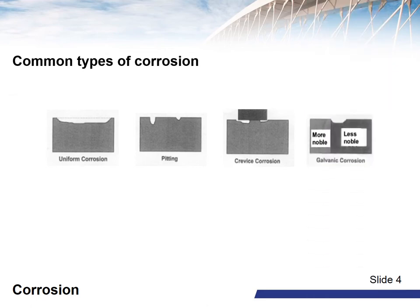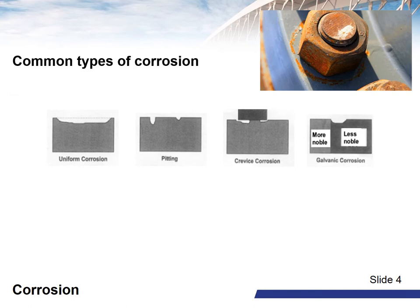Galvanic corrosion: this form of corrosion occurs when two different metals with physical or electrical contact are immersed in a common electrolyte, such as salt water, or when a metal is exposed to different concentrations of electrolyte. Where two metals are immersed together, known as a galvanic couple, the more active metal — the anode — corrodes faster than the more noble metal, the cathode. The galvanic series determines which metals corrode faster, which is useful when using a sacrificial anode to protect a structure from corrosion.